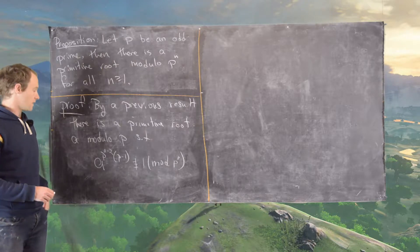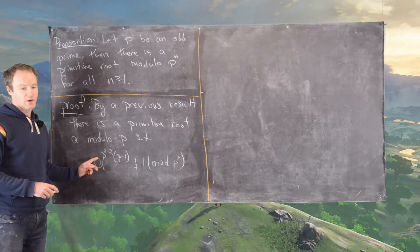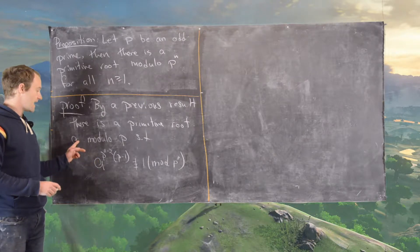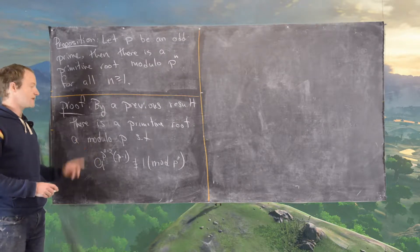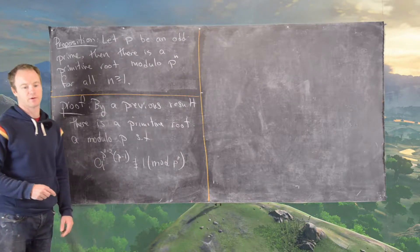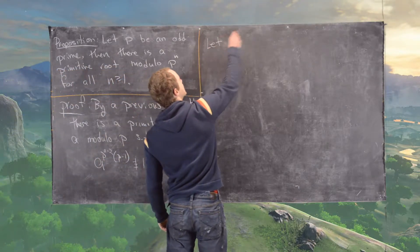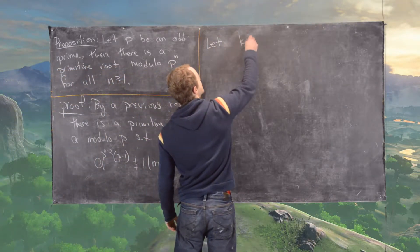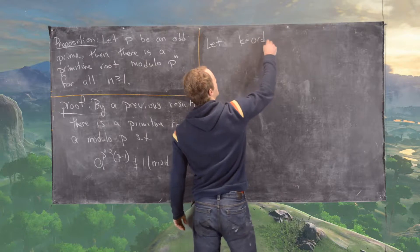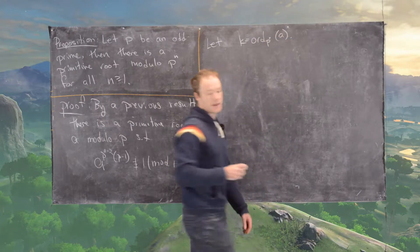Now let k be the order of this a, and what we'll show is that this a is indeed the primitive root we're looking for. So let k equal the order of a modulo p^n.